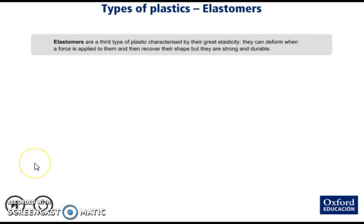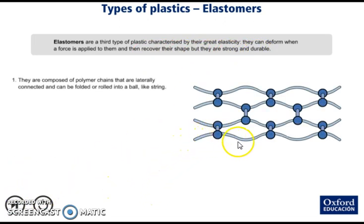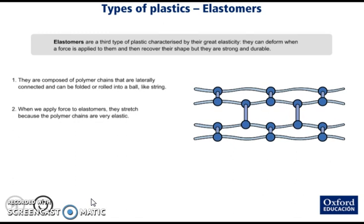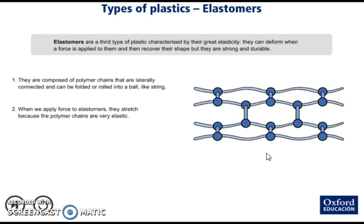The last type of plastics are elastomers. The main property of elastomers is that they have great elasticity — they can deform when a force is applied and then recover their shape, and they are strong and durable. Internally, they are composed of polymer chains that are laterally connected and can be folded or rolled like a string. When we apply force to elastomers, they stretch because the polymer chains are very elastic.